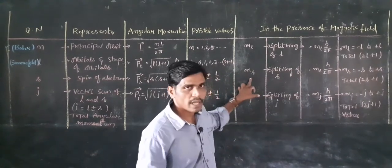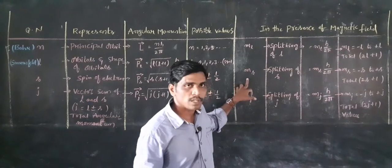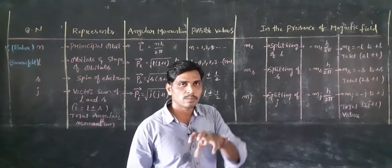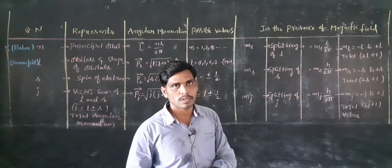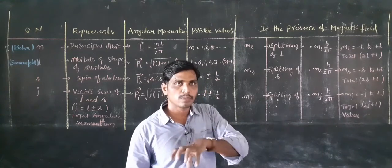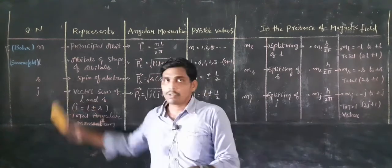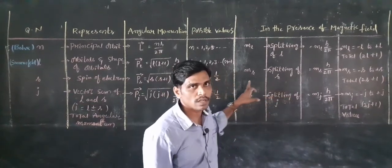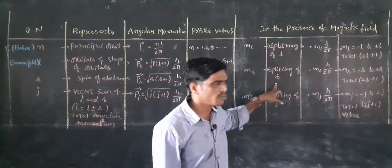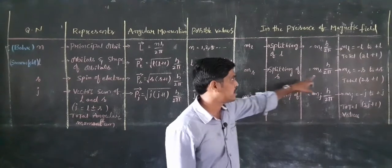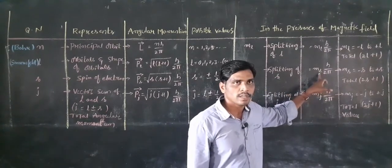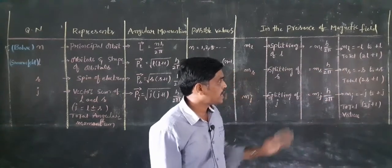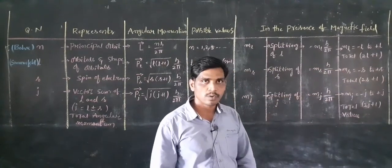The spin magnetic quantum number arises when an external force is applied to the spin. The spin angular momentum splits out. This is the splitting of S. The angular momentum component is M_S · h/2π. The possible values of M_S range from −S to +S, and the total value is (2S+1).